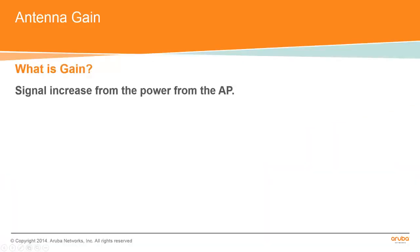Before we start on how to configure the antenna, I'll be explaining what antenna gain is. The gain is how much signal the antenna produces without getting an additional boost from power gain from the AP. So the higher the gain on the antenna, the more coverage the AP with the antenna connected to it will produce.